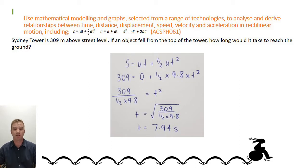Sydney Tower is 309 meters above street level. If an object fell from the top of the tower, how long would it take to reach the ground? Now that's displacement, so s equals u t plus half at squared. We know displacement is 309.